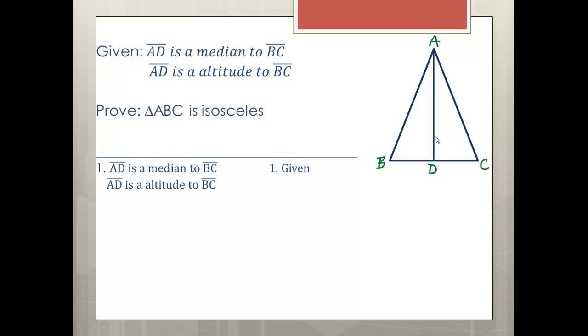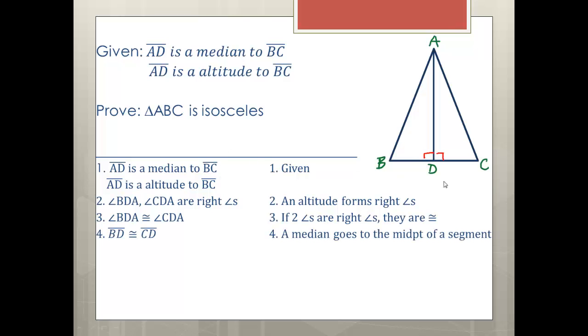Okay, so write down your givens: AD is a median to BC and also an altitude. And from here I can say, well, angle BDA and angle CDA are right angles because an altitude forms right angles. So I know that this is congruent to this now. I can also say that they are congruent because if two angles are right angles, then they are congruent. Okay, so first we have to state that they're right angles. Then we state that they're congruent because they're right angles. Then I can say that segment BD is congruent to segment DC because a median goes to the midpoint of a segment, and we know a midpoint divides a segment into two congruent parts.